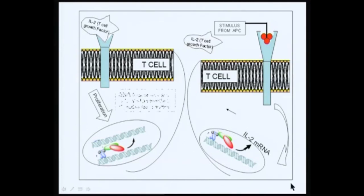The synthesis of DNA can be followed by the incorporation of radioactive thymidine. All one does is add tritiated thymidine to the activated T cell preparation, precipitate the DNA using trichloroacetic acid, filter out these macromolecules, and count it in a beta scintillation counter. Therefore, more radioactive incorporation means more T cell activation.